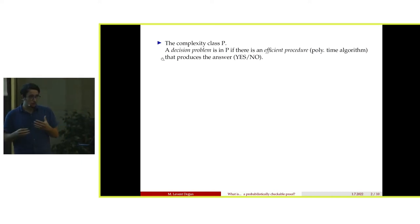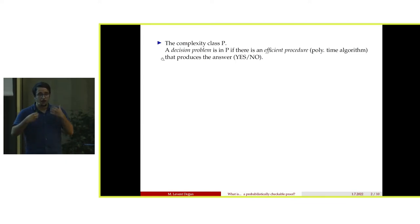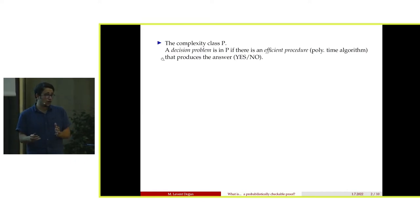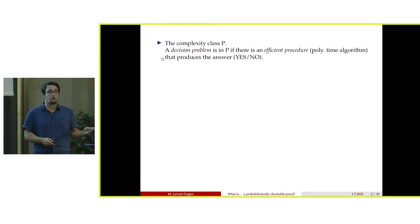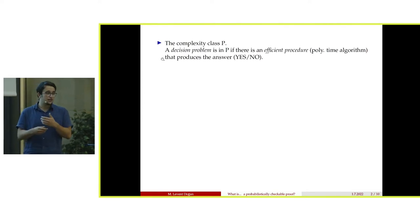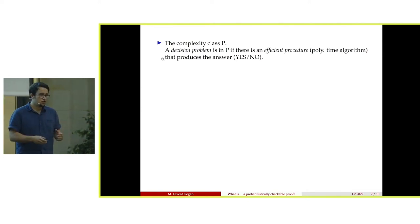P is the set of all decision problems where there is an efficient procedure that allows you to answer the question. A decision problem means I will ask you a question and you need to answer yes or no. For example, I give you a graph and ask: is this graph connected? You either say yes, it is connected, or no, it is not connected.